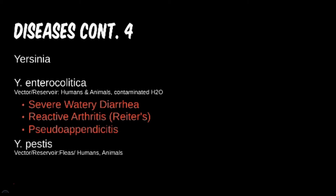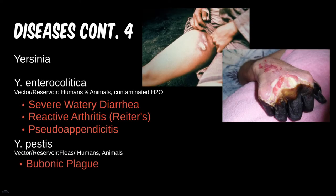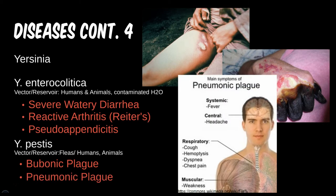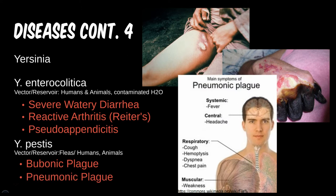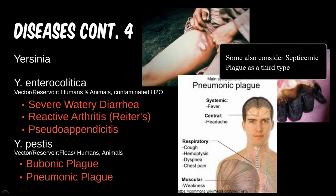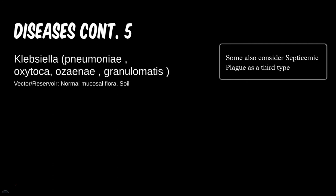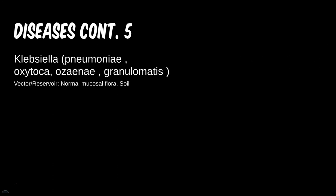Yersinia pestis is the cause of the infamous plague epidemic. It is spread by fleas on rats and was thought to travel via rodent stowaways on ship voyages. There are actually two main types of plague. Bubonic plague is the one of notoriety — it causes buboes, or large lymph nodes, which can be as large as a chicken's egg. Pneumonic plague, on the other hand, is mostly limited to respiratory symptoms similar to pneumonia, develops quickly, and can lead to hemoptysis as well.